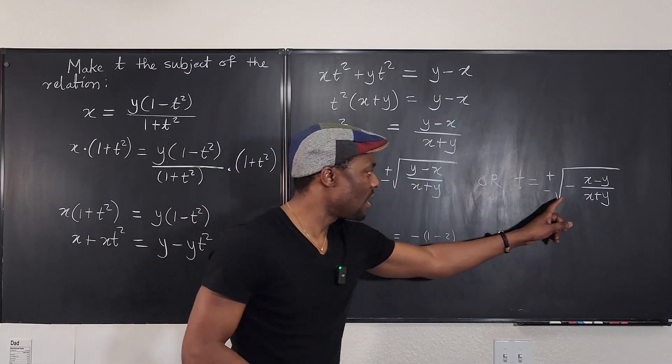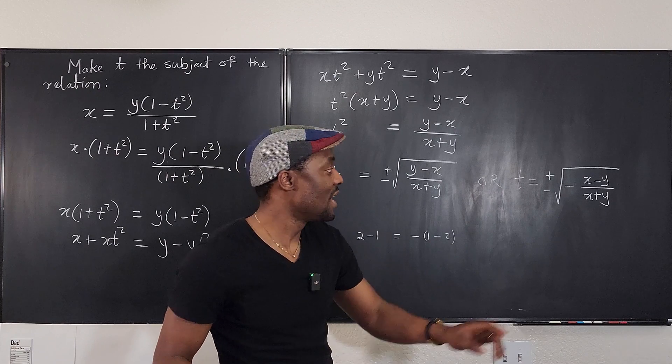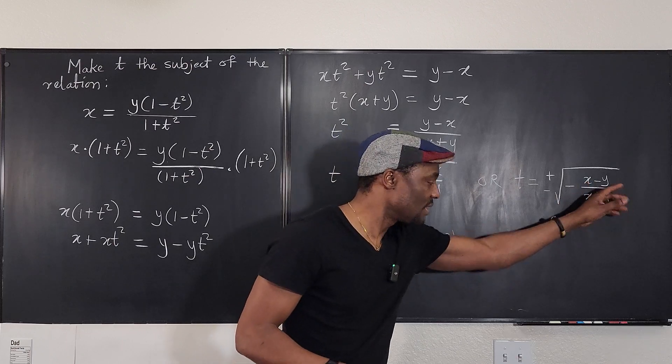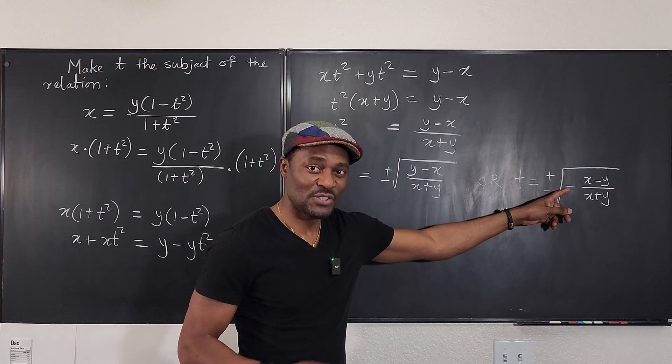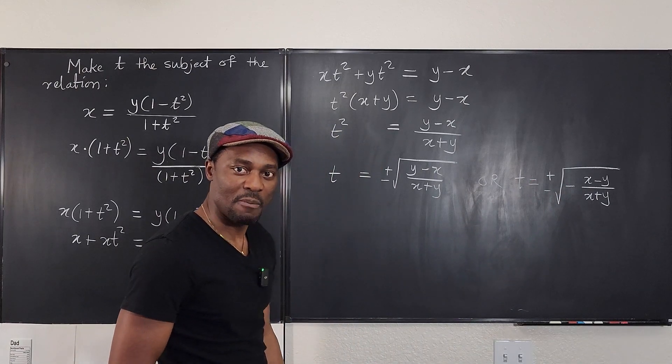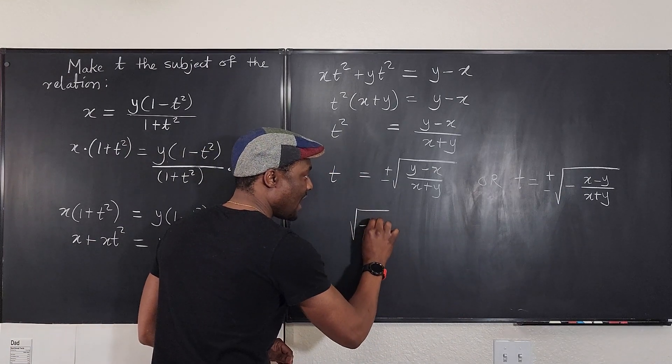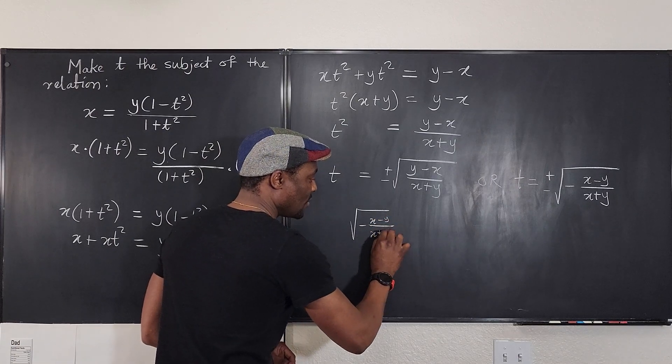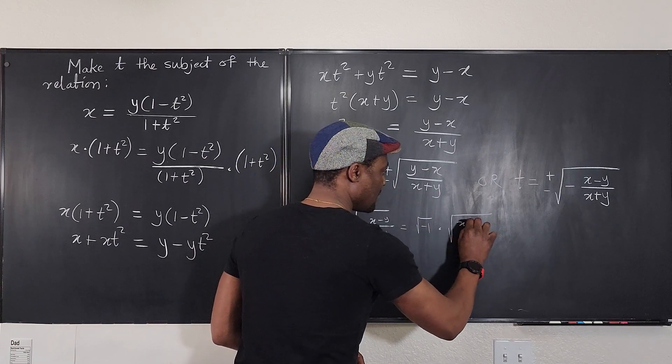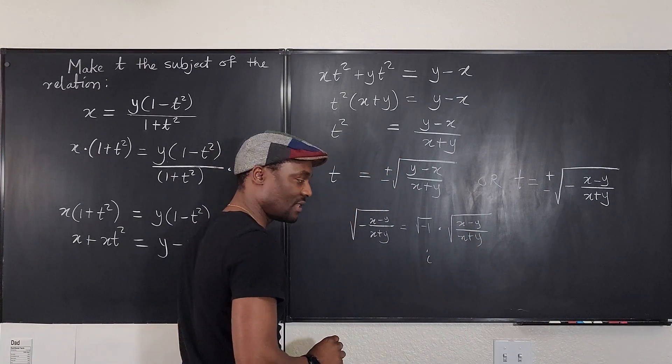But someone will say, why do you want to have a negative sign under a square root sign? Well, you can have a negative sign under a square root sign as long as this number is not positive. So if Y is not less than X, then this is good. It doesn't matter. So one last way we can present our answer is to pull out this negative one with the negative sign. So you can actually write it this way and say, the square root of negative X minus Y over X plus Y can be written as the square root of negative one times the square root of X minus Y over X plus Y. And we know what the square root of negative one is. It is i. So you can write it this way.